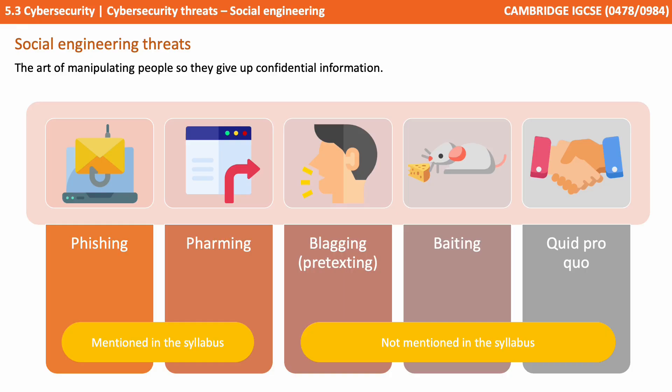The two mentioned in the syllabus are phishing and pharming, and we'll discuss those first. But we're also going to cover three additional ones which, although not technically mentioned in your syllabus, will add to your general understanding. And these are blagging, baiting, and quid pro quo.